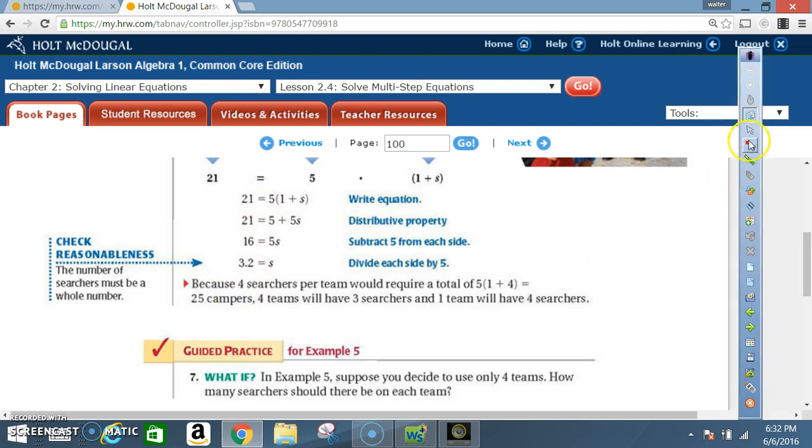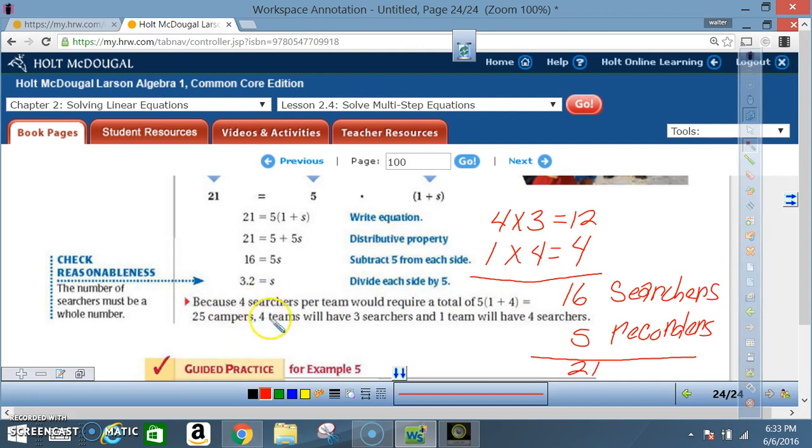Okay, now with that in mind, then four teams will have three searchers and one team would have four searchers. Four times 3 is 12, one times 4 is 4, so 12 plus 4 is 16, that's 16 searchers. And since we have five teams and each team has one recorder, we get 16 plus 5, that would give us 21. And that concludes example five.